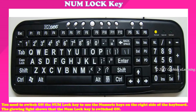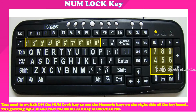There are two sets of number keys on the keyboard. You need to switch on the Num Lock key to use the numeric keys on the right side of the keyboard. The glowing light shows that the Num Lock key is switched on.